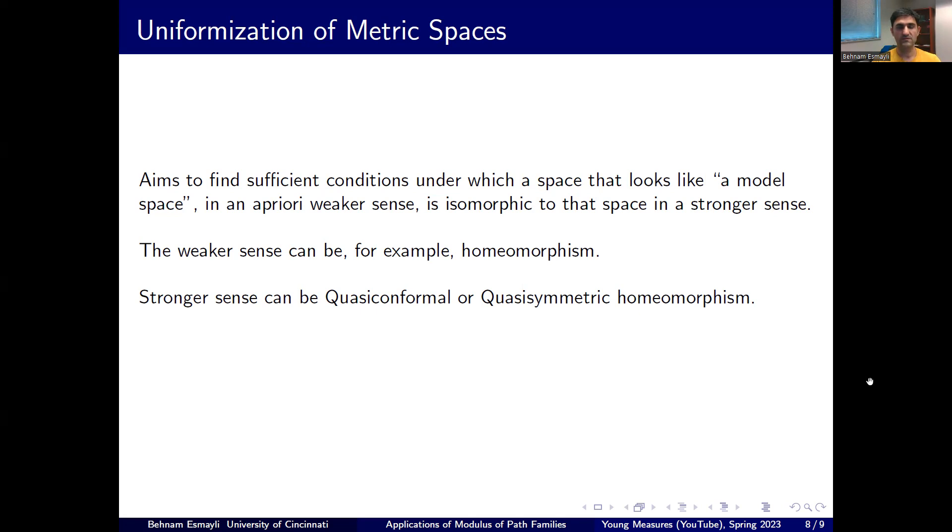One of the cornerstone results is a result due to Bonk-Kleiner. A more recent result is due to Kai Rajala, who proves when two-dimensional metric spaces, which are called metric surfaces, are quasi-conformal equivalent to a two-dimensional standard space, which is a plane in the non-compact case, a sphere in the closed manifold case, and also the unit disk with the boundary case. And it turns out the very fundamental property required of the metric space, basically a sufficient and necessary condition for a metric surface to admit a quasi-conformal map onto one of these spaces, is what is called reciprocality.